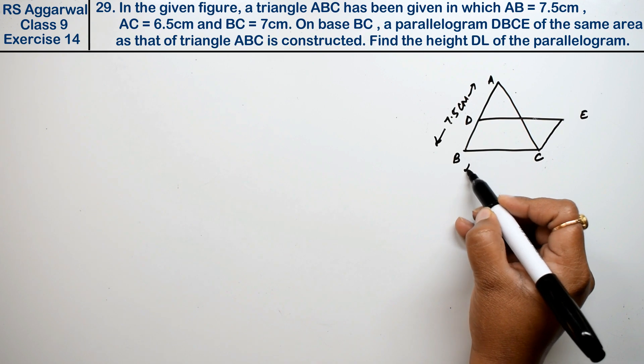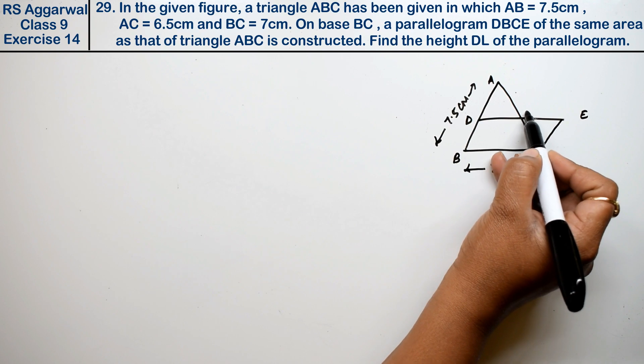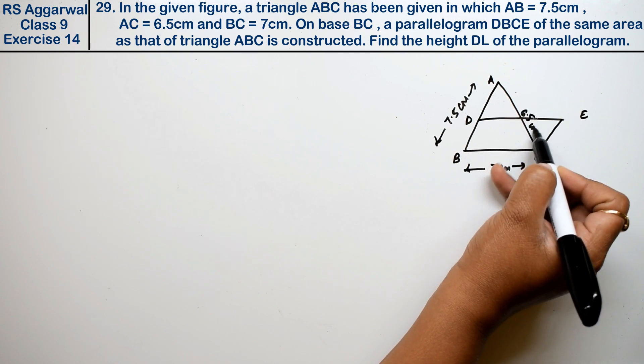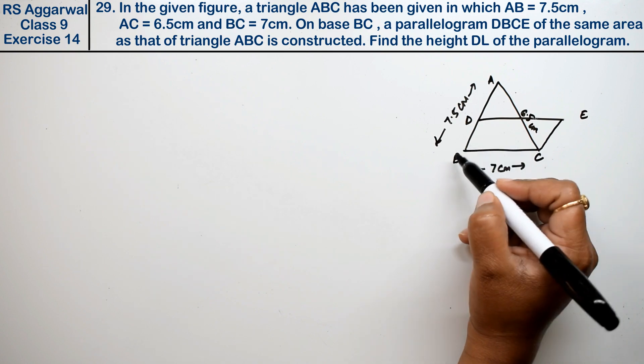BC is 7.5 cm and AC is 6.5 cm, right friends.